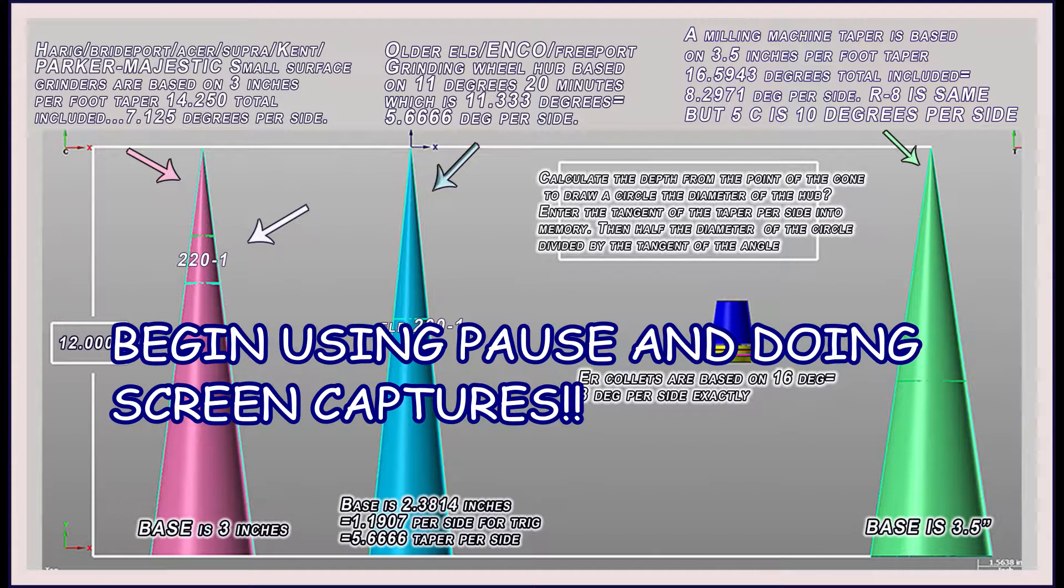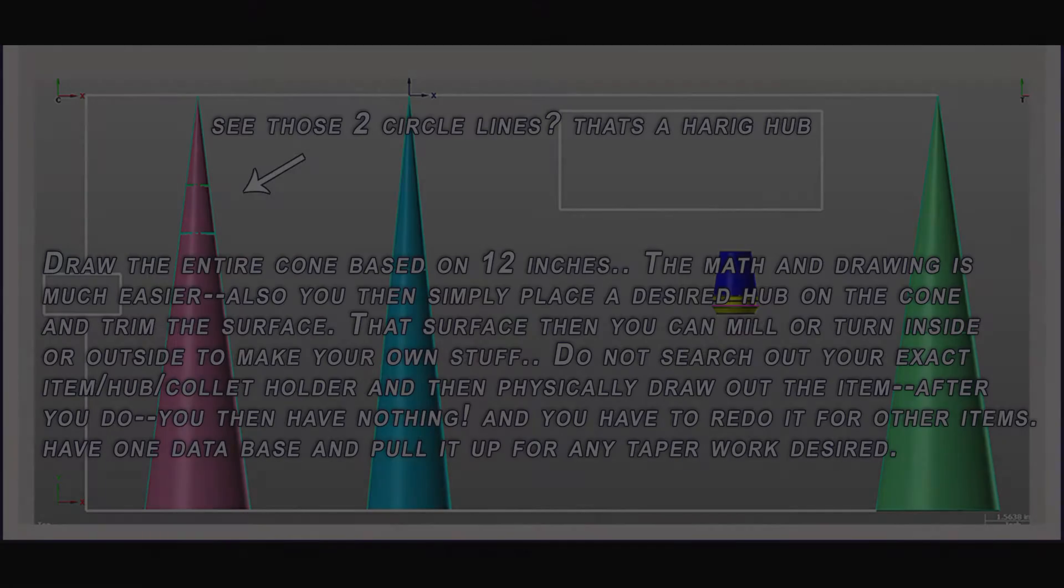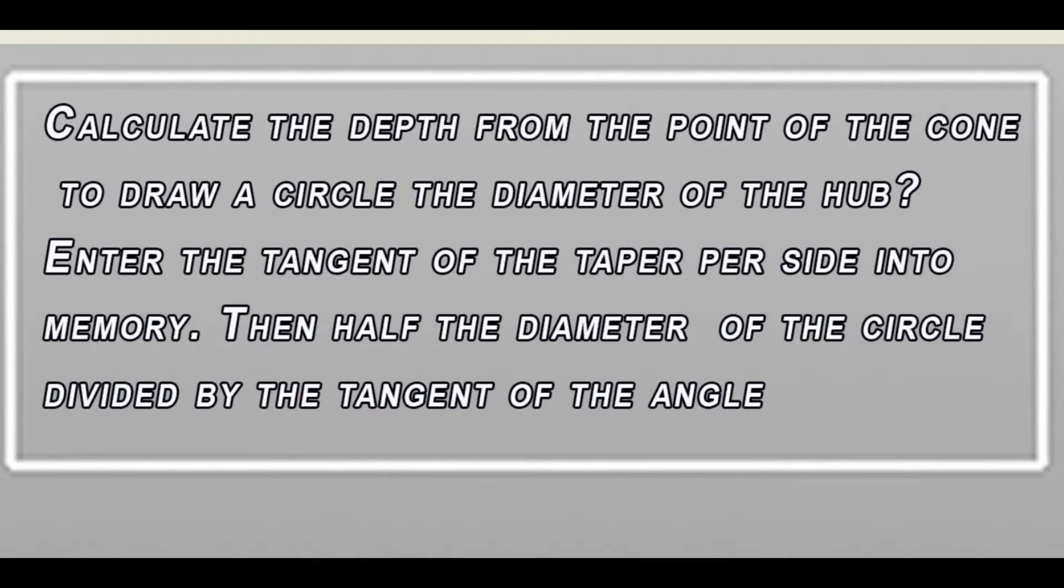That's a very good drawing there. After the letters go away, you can save it, do a screen capture. That is one good drawing you want to save right there. This explains why those two lines are there that I keep yapping about, and because you need to know where to draw them on the cone for your hub.